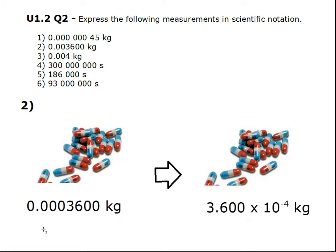Number 2. 0.0003600 kg. So we pull out the significant figures, which is 3600, and we reduce it to something between 1 and 10, so 3.600. And then we count the number of decimal places that I moved: 1, 2, 3, 4. So the final answer is 3.600 times 10 to a negative 4 kg.